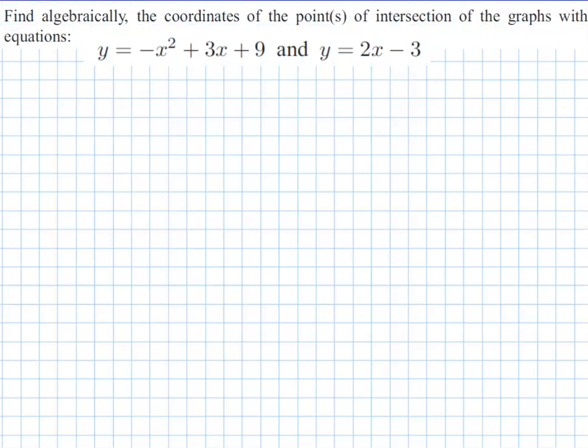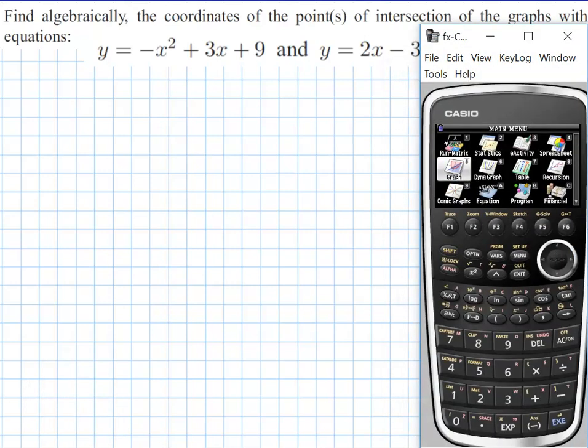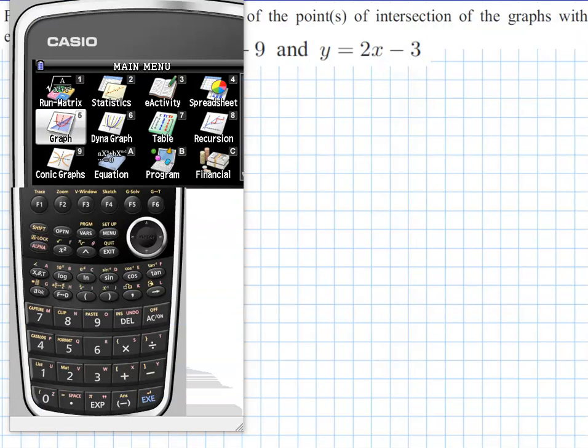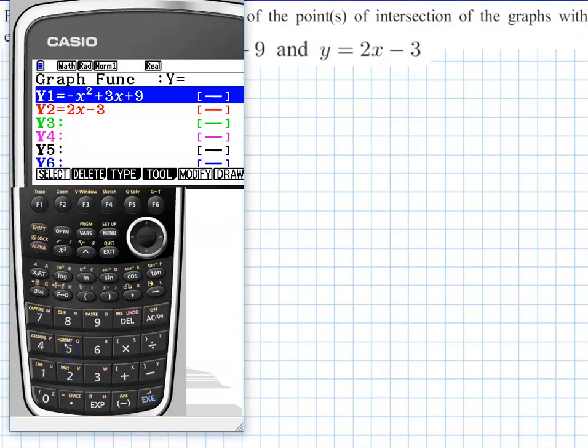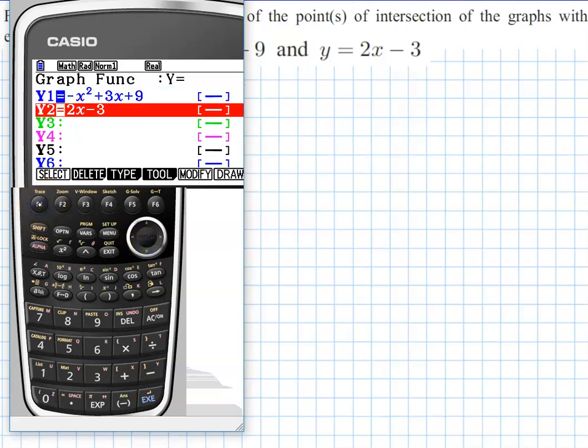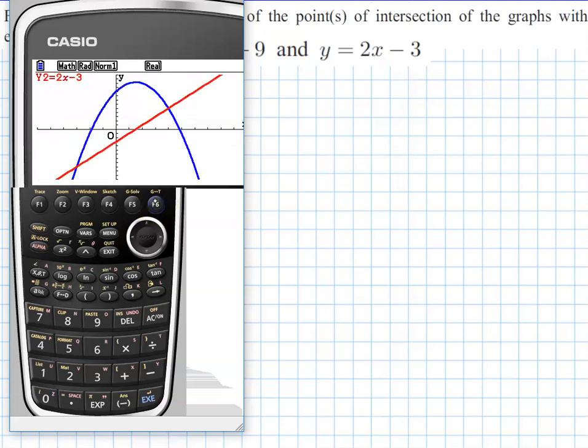All right, next we can also solve these using technology. So if I were to graph these two using my graphing calculator, just to make it a bit bigger, we'll go to first up graph. So number 5, and I've got my two functions in there already, so let's make sure they're selected so that I can graph them. All right, so now if I were to draw those on my calculator, we can see we've got two points of intersection.